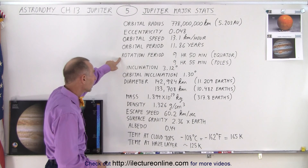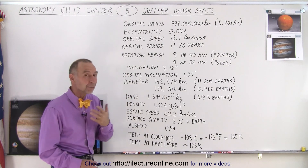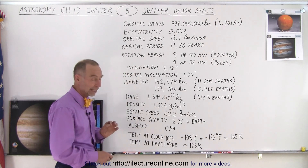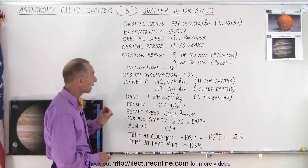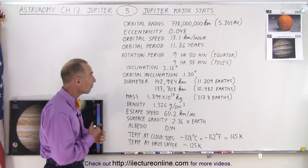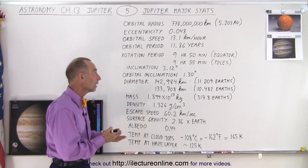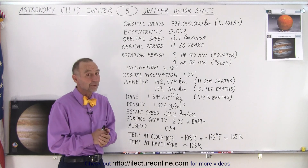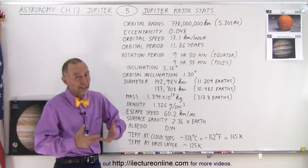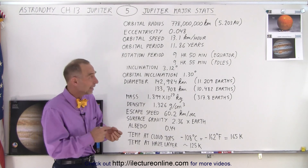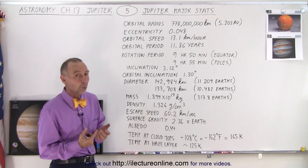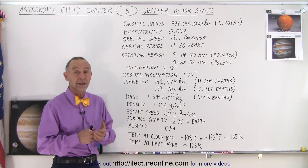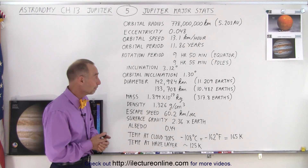The rotation period is much faster than any other planet in the solar system — a little bit faster than Saturn, at 9 hours and 50 minutes at the equator and 9 hours and 55 minutes at the poles. Because it's a gas planet, just like with the Sun, it rotates faster at the equator than it does at the poles.